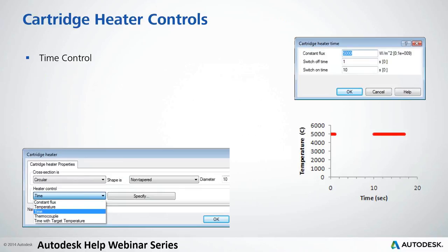For cartridge heater controls, there are five different options. Constant flux defines the energy introduced by the heater. Constant temperature doesn't change over time. Time control defines a flux introduced for a period of time — note the order is switch off time then switch on time, meaning from the beginning of the cycle the cartridge introduces energy. For example, defining time off at one second means from zero to one second we introduce 5000 W/m², then a break, then more energy until the cycle finishes.